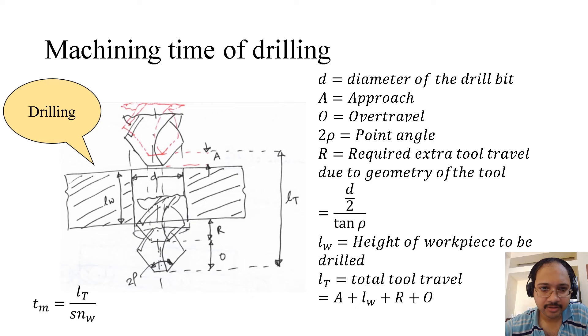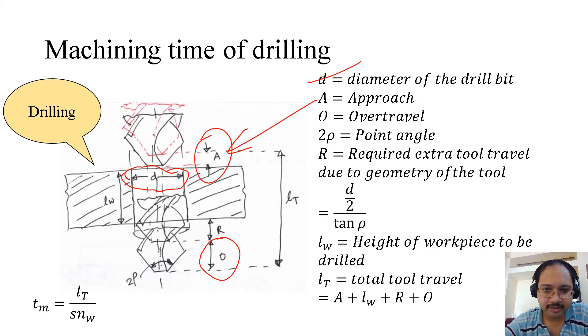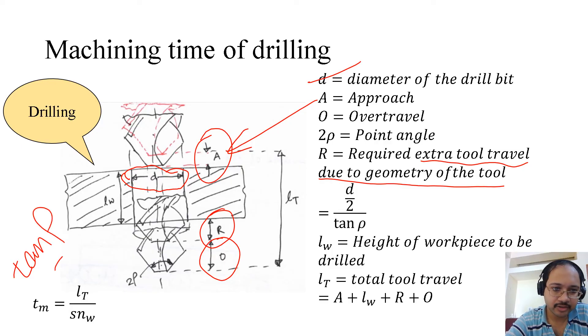Coming to the machining time of drilling. We can see here the drilling operation where d is the diameter, A is the approach, O is the over travel, just like before. Something we need is R which is an extra travel due to the geometry of the tool. How can we find out this R? tan ρ equals to D by 2 by R. If you reorient that, you will get R equals to D by 2 divided by tan ρ. Lw is the height of the workpiece which is to be drilled.